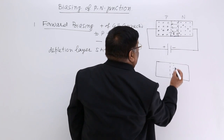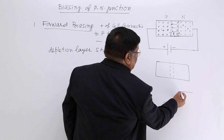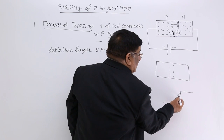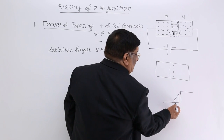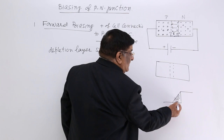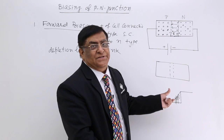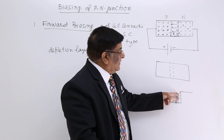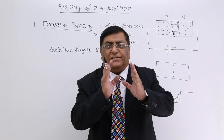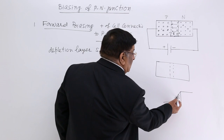There was a potential barrier — high potential on one side and low potential on the other, with a certain distance. Now, as the depletion layer decreases, the potential barrier comes down to a lower level. If it decreases further, the potential barrier becomes even smaller. So as the depletion layer keeps shrinking — from 5 volts to 3, 2, 1 volt — the potential barrier gets lower and lower.